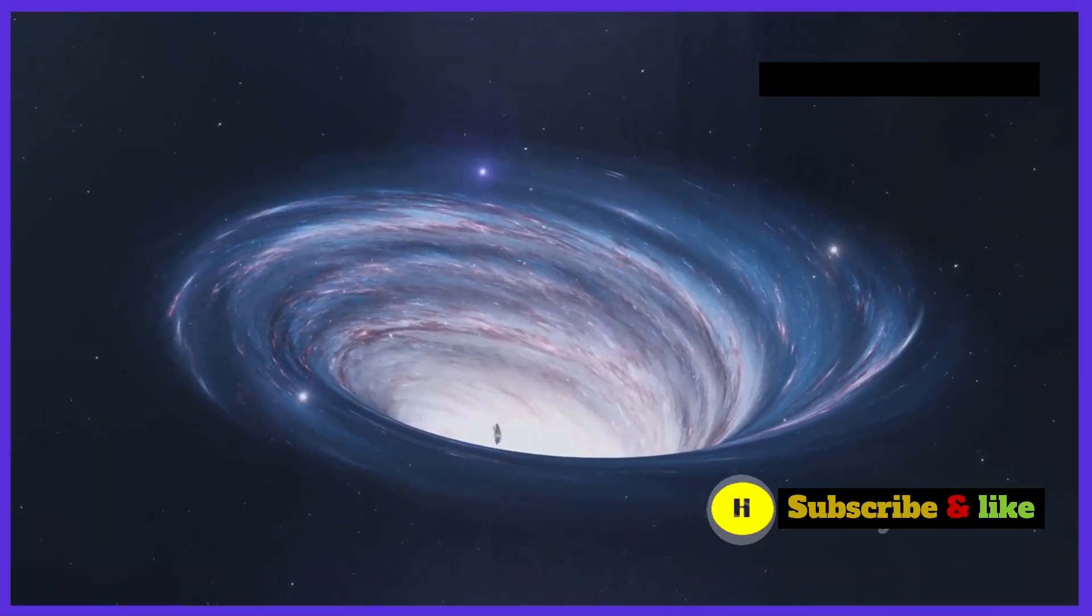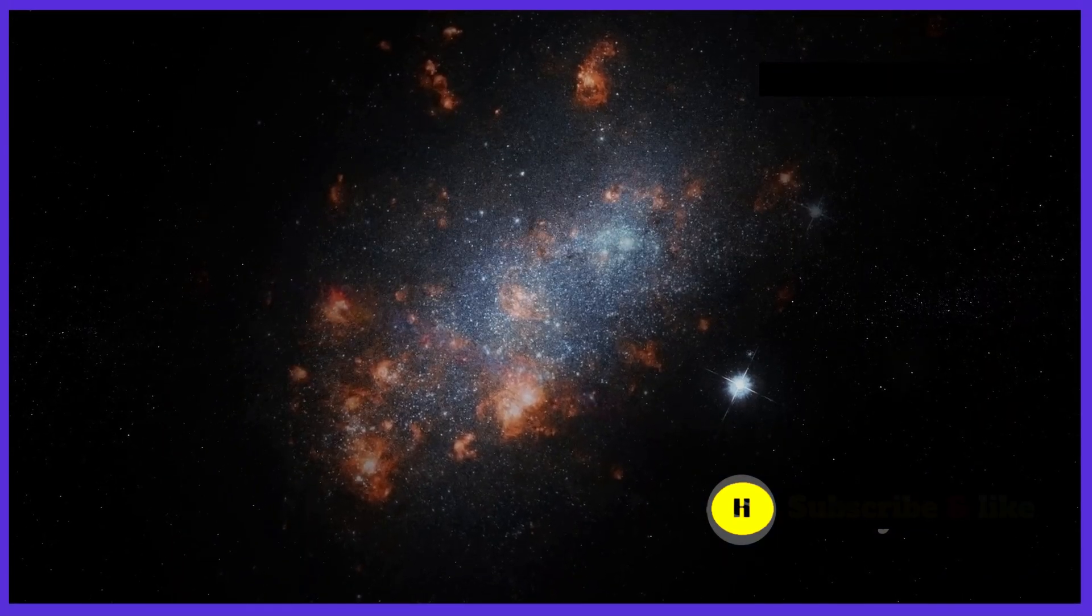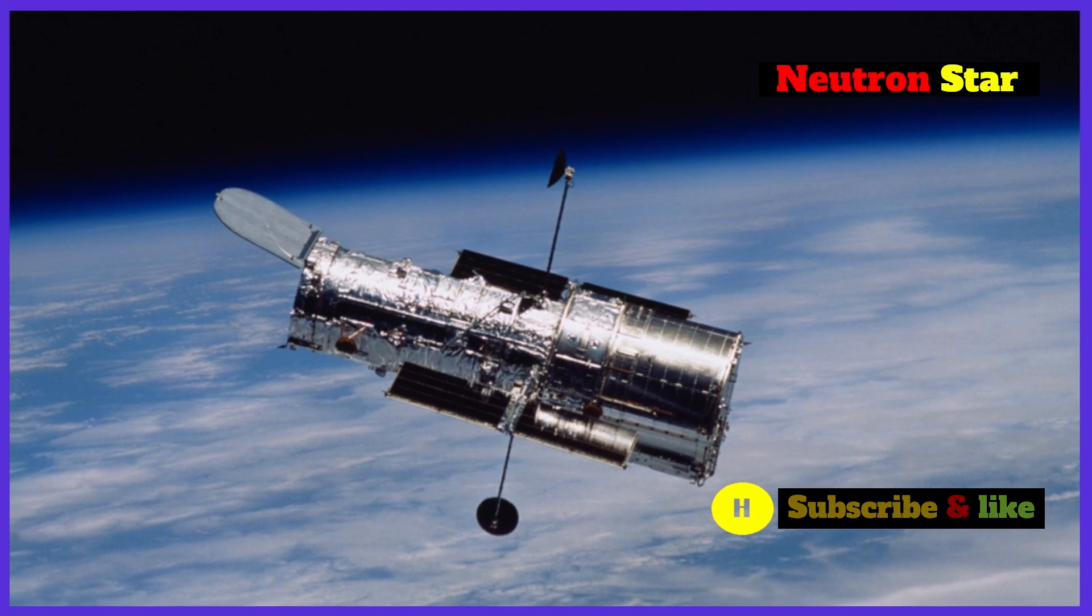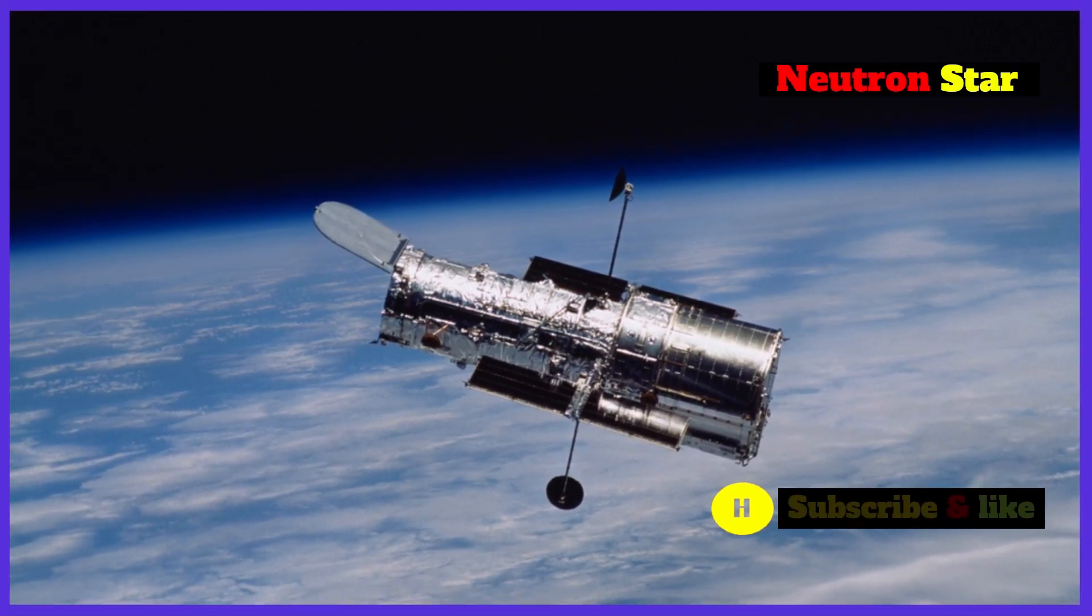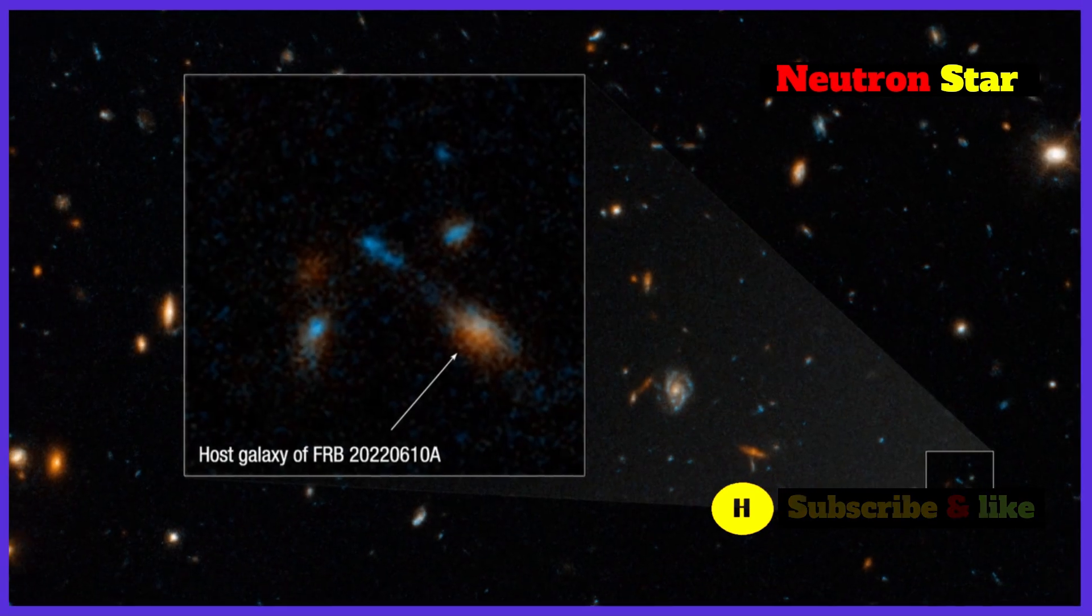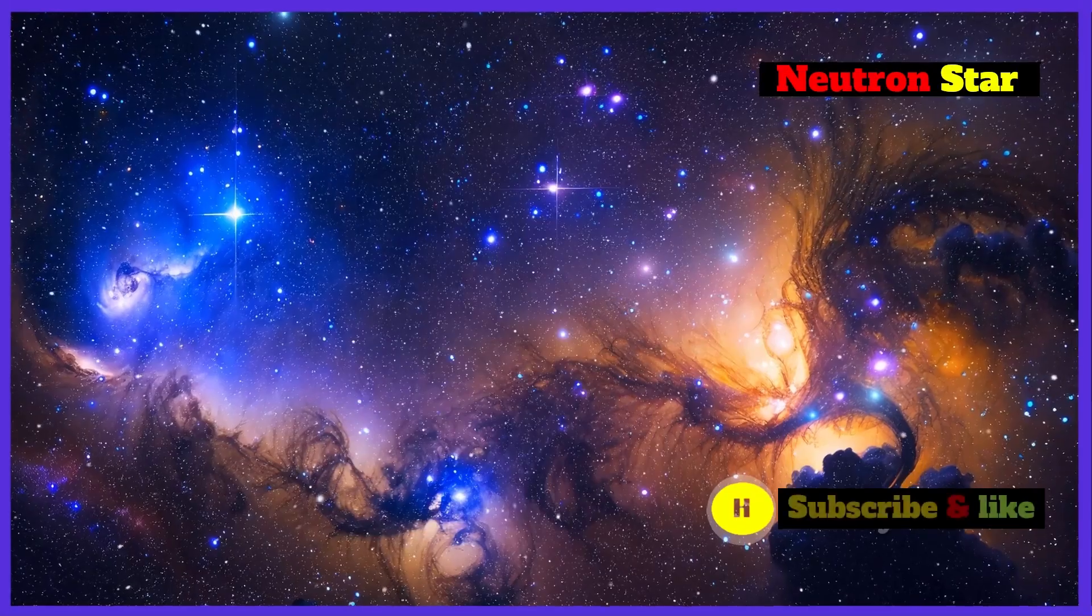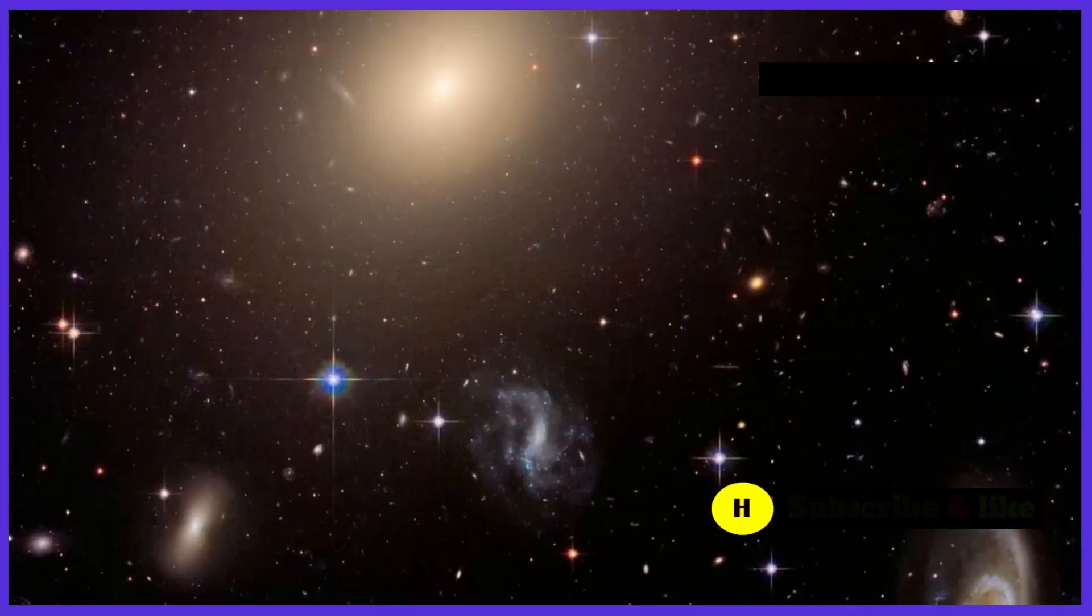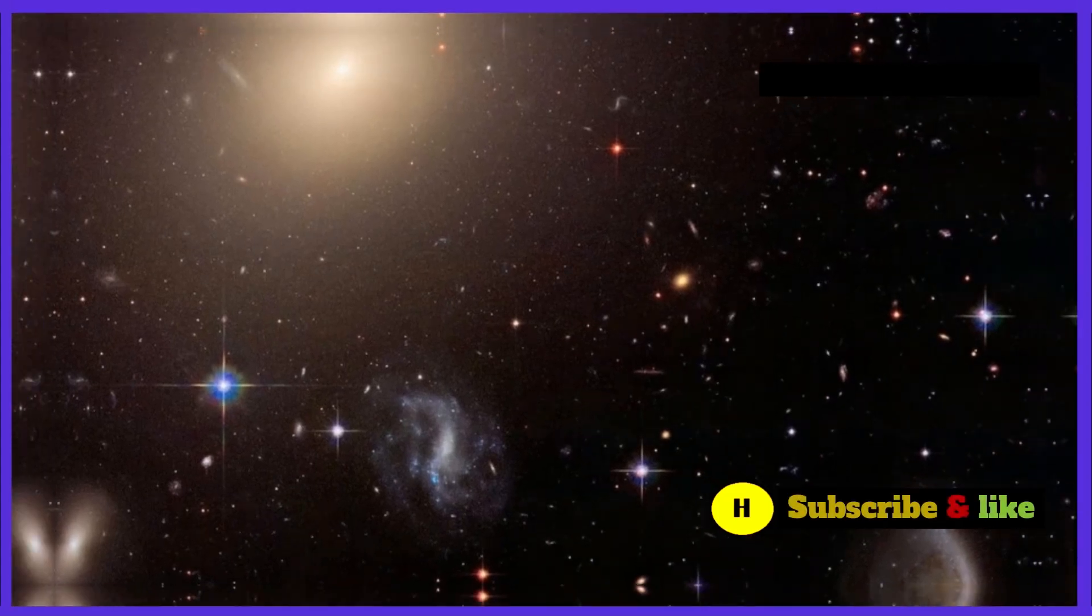FRBs are short, intense pulses of radio waves. They come from space and last only a few milliseconds. Discovered in 2007, FRBs are one of the most exciting mysteries in astronomy today. These cosmic flashes are powerful. They release as much energy in a millisecond as the sun does in three days. Scientists are eager to understand what could possibly cause these energetic events.